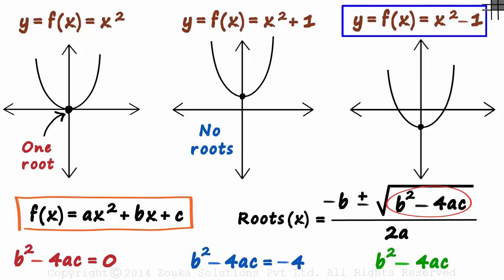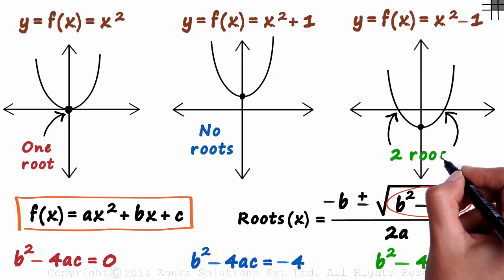The third function is interesting. b is zero, a is one, and c is minus one. This value equals four. This is positive and hence it should have two roots. Does the graph say that? Absolutely! The value of f(x) is zero at these two points. They are the two roots of the equation.